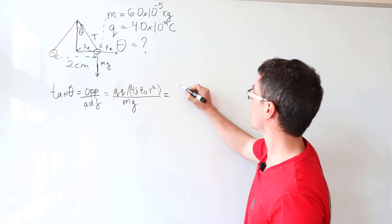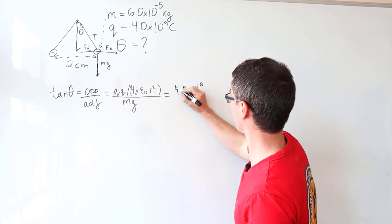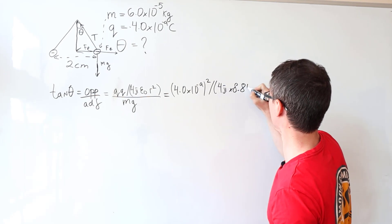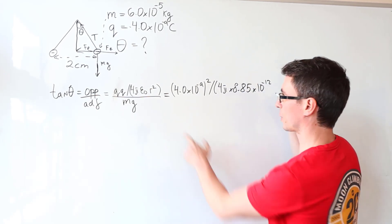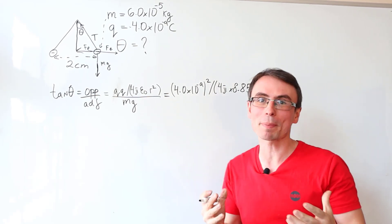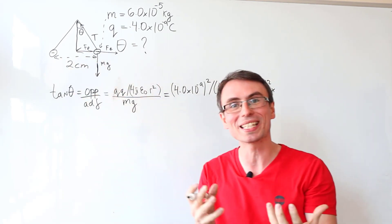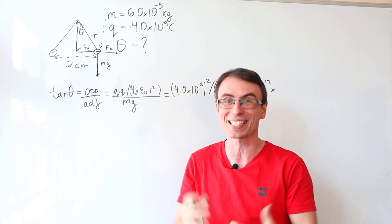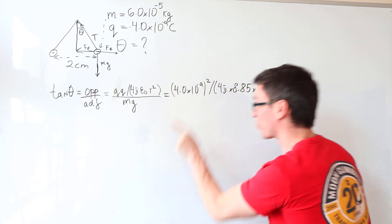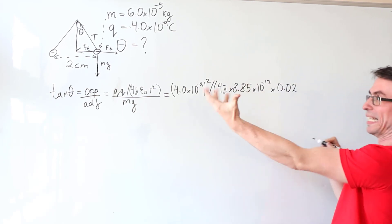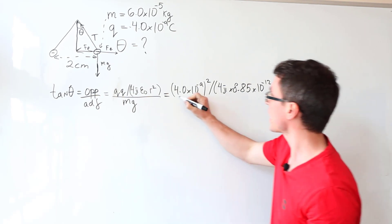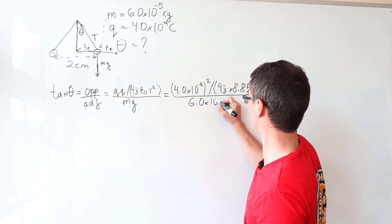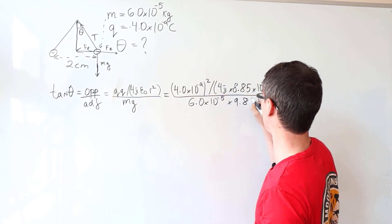So the charge is just going to be 4.0 times 10 to the power of minus 9. Then I'm going to be essentially squaring that. Then I'm going to be dividing this by 4 pi times 8.85 times 10 to the power of minus 12. That's epsilon naught. And then I'm going to be multiplying this by R. Now, R is the distance between the two spheres, which is 2 centimeters, and I need to square this. One of the most common mistakes in physics is to forget to carry a square. So we're not going to forget that. I'm going to say 0.02, which is 2 centimeters in meters squared. Then I'm going to be dividing that by mg, which is just going to be 6.0 times 10 to the power of minus 5 multiplied by 9.81.